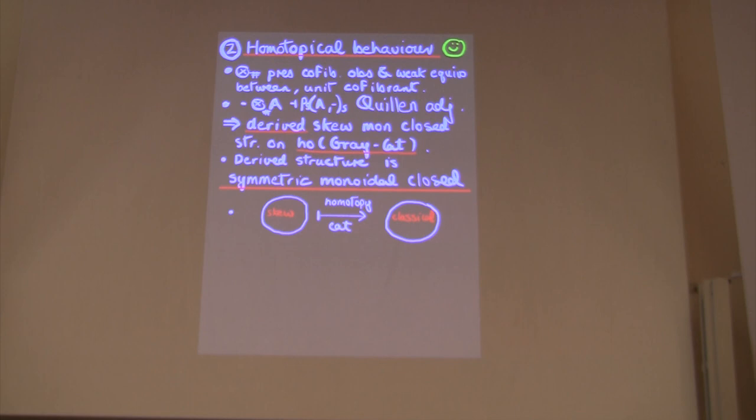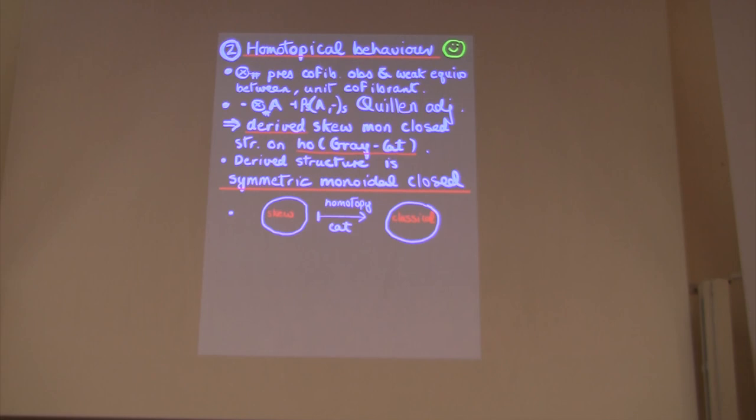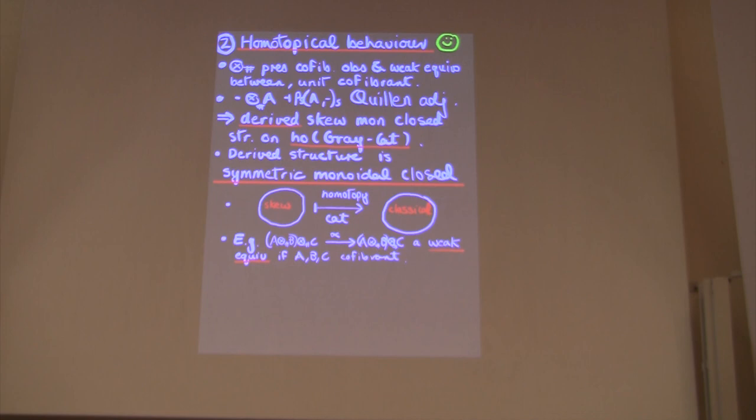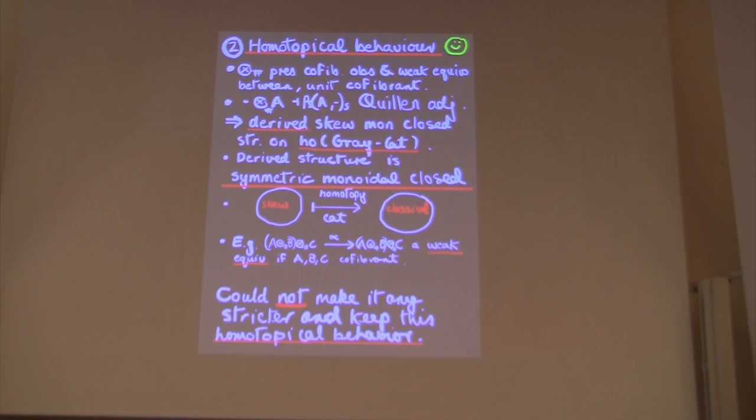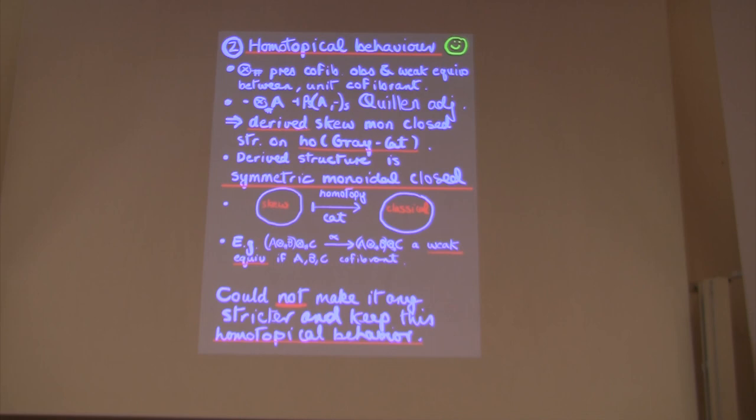And the fun thing is that when you do this in this case, the resulting structure you get is really symmetric monoidal closed. So it's a sort of skew structure which is like a homotopy monoidal category. So for example, this means that if you've got cofibrant objects A, B, and C, the associator would be a weak equivalence, and things like this. And so an interesting remark is that you could not make this any stricter and keep the good homotopical behavior. So you couldn't make that internal hom any stricter, you would break the fact that you've got a Quillen adjunction. Anyway, that's just, so this is as strict as, if you're interested in this natural model structure, it's as strict as you could get.